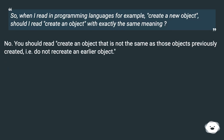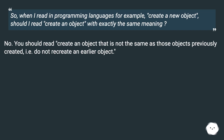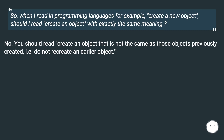So, when I read in programming languages, for example, 'create a new object,' should I read 'create an object' with exactly the same meaning? No — you should read it as 'create an object that is not the same as those objects previously created,' i.e., do not recreate an earlier object.